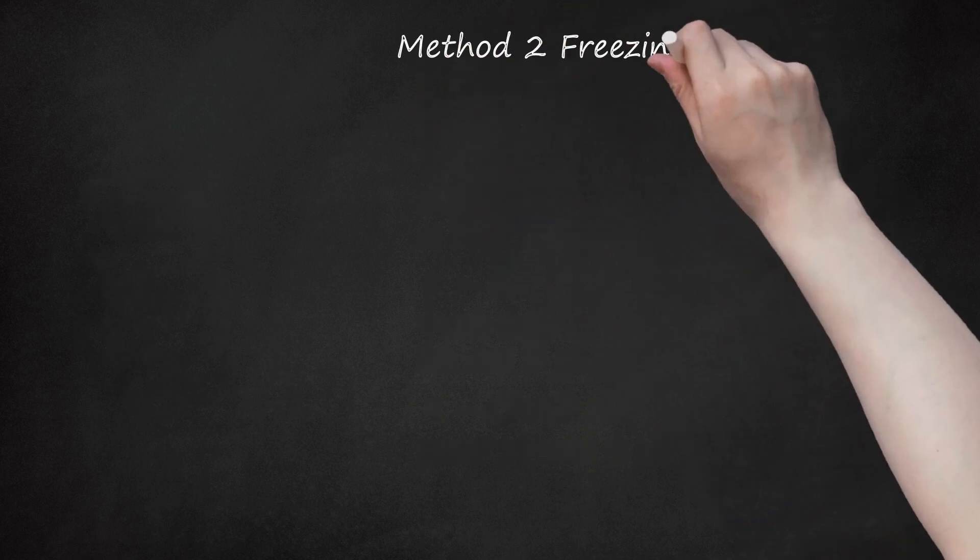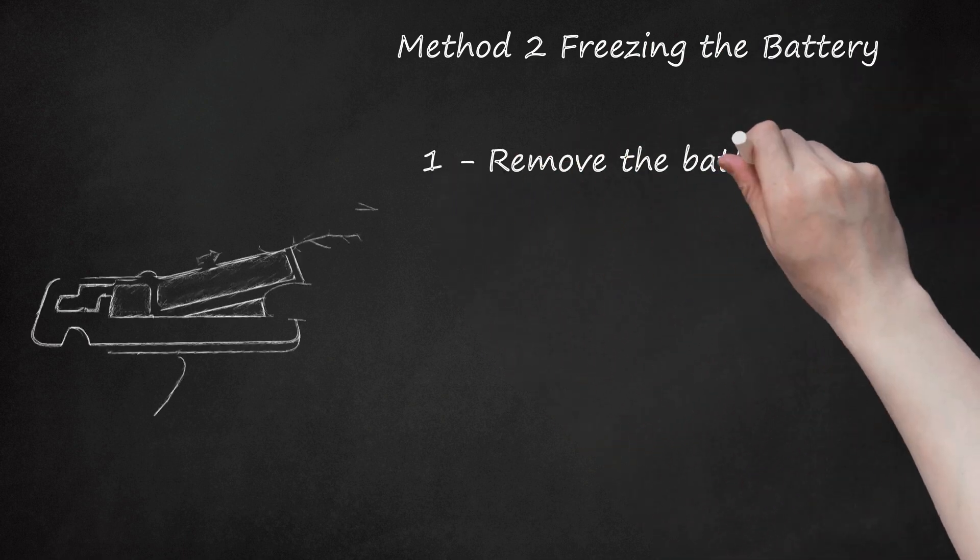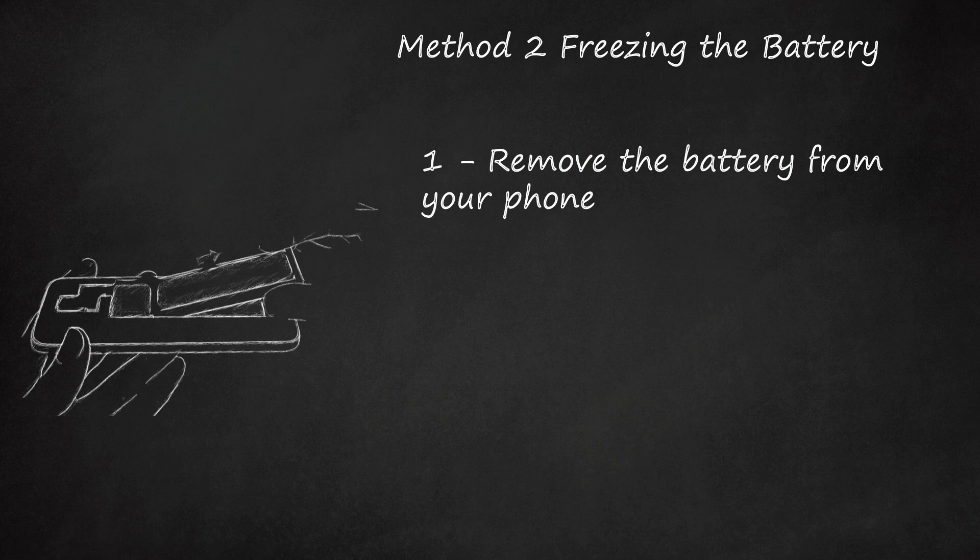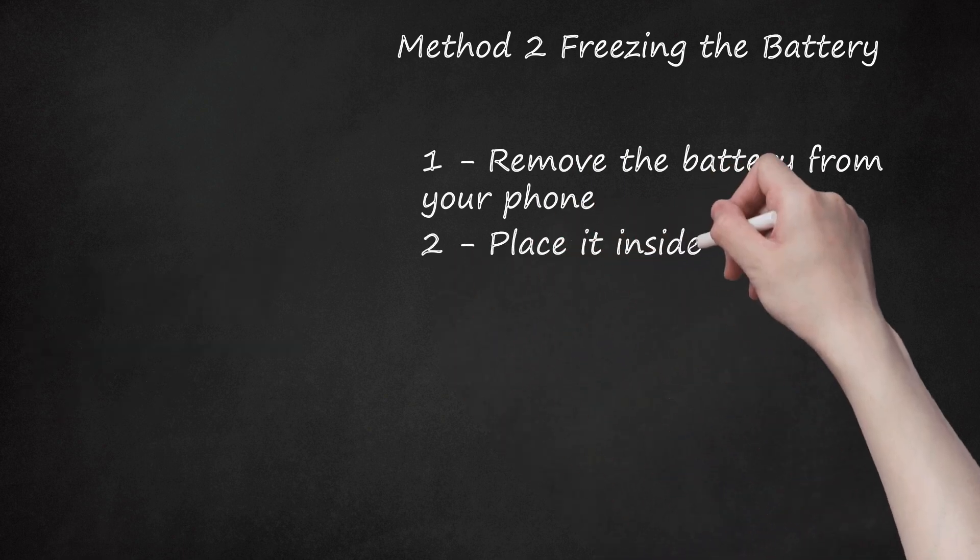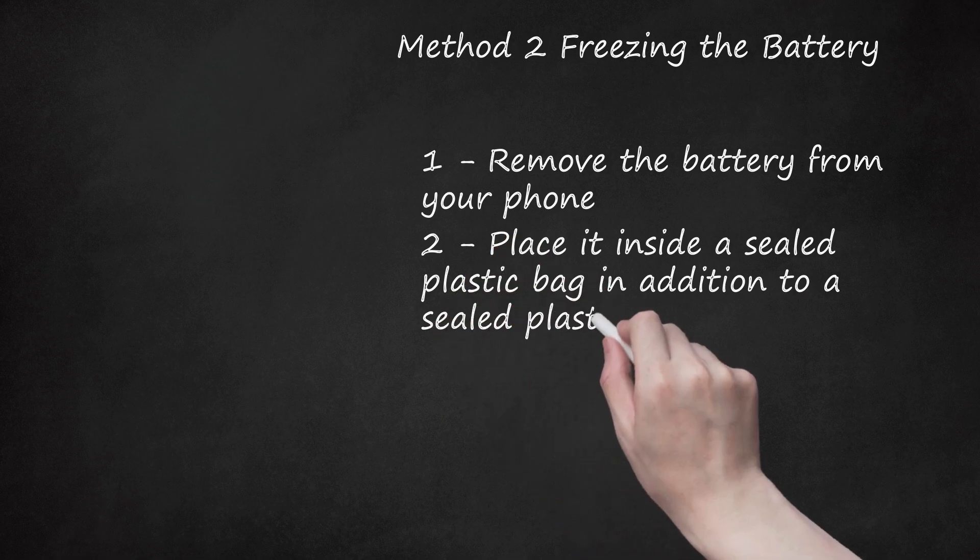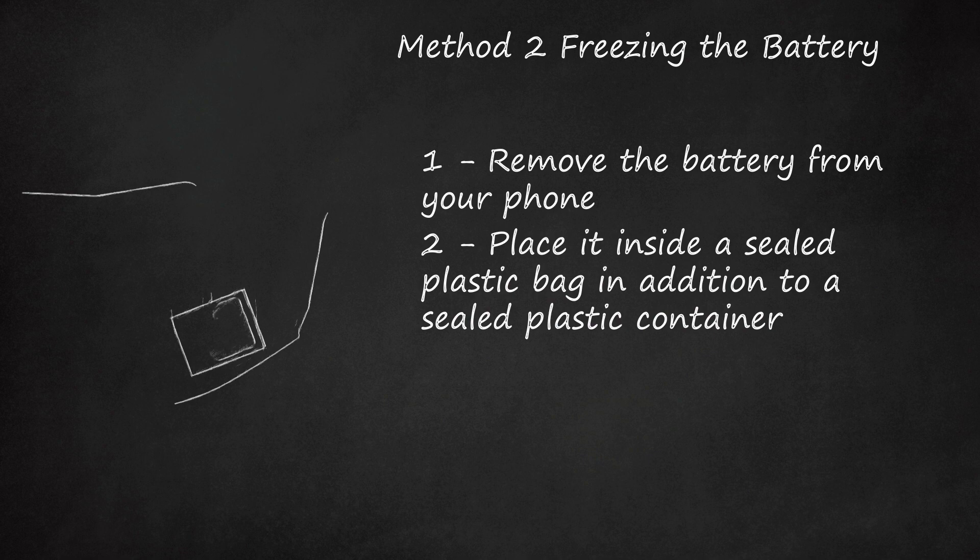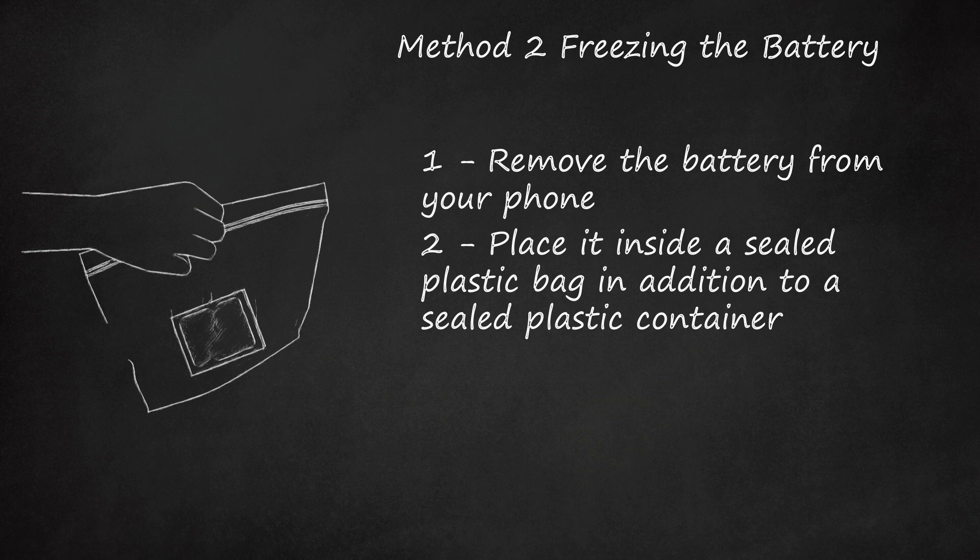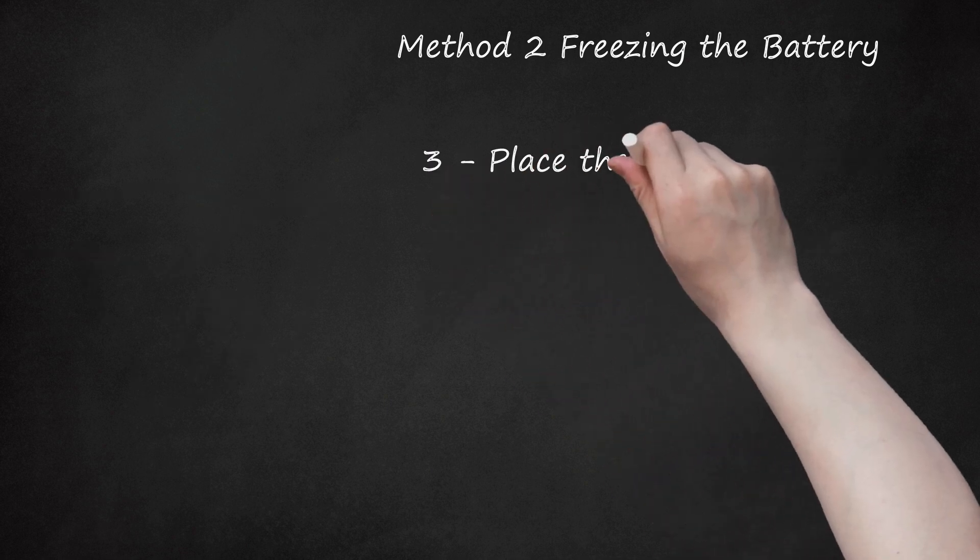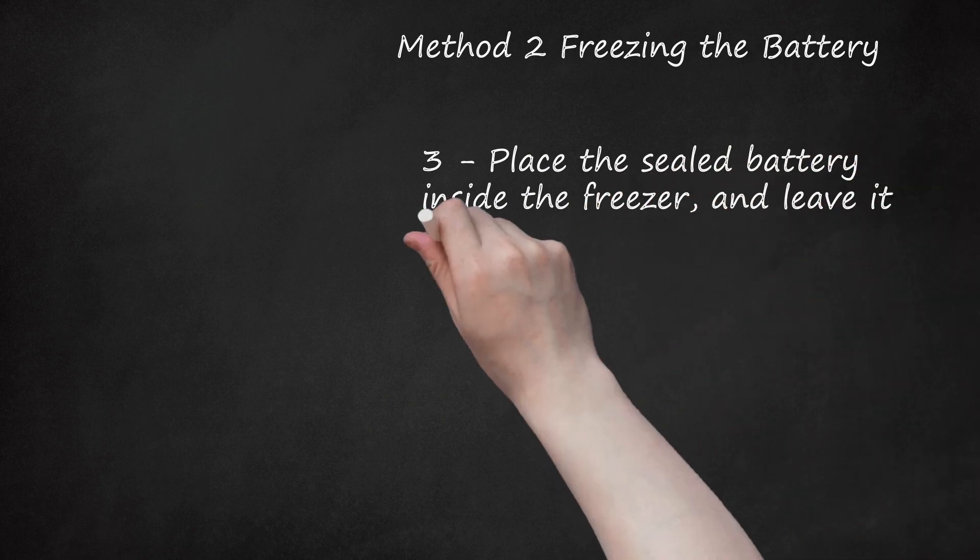Method 2: Freezing the battery. Remove the battery from your phone. Place it inside a sealed plastic bag in addition to a sealed plastic container. This will prevent it from getting wet. Do not use paper bags or foils as water can easily penetrate these materials. Place the sealed battery inside the freezer and leave it overnight or at least 12 hours.